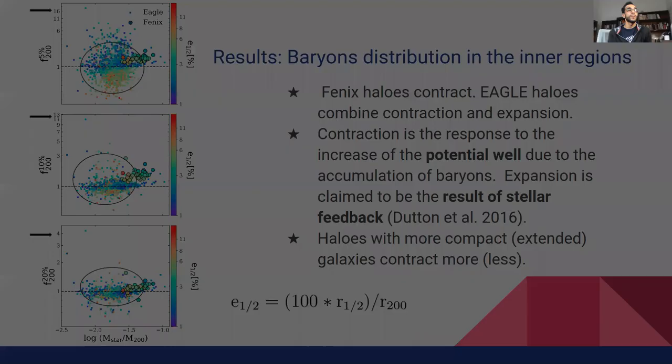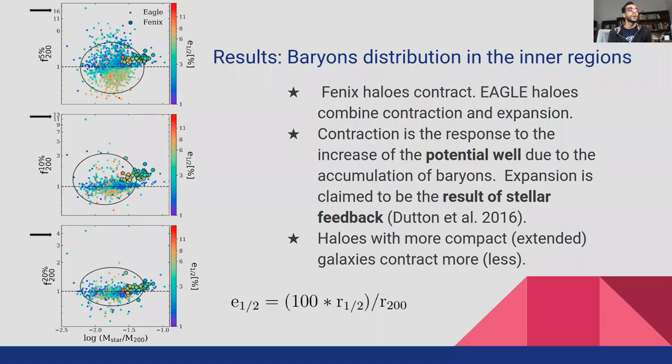Regarding the color in the figure, in the most inner region, within 5% of the virial radius, halos hosting more compact galaxies tend to be more contracted as can be seen in the top panels. Blue dots and red and yellow dots on bottom.